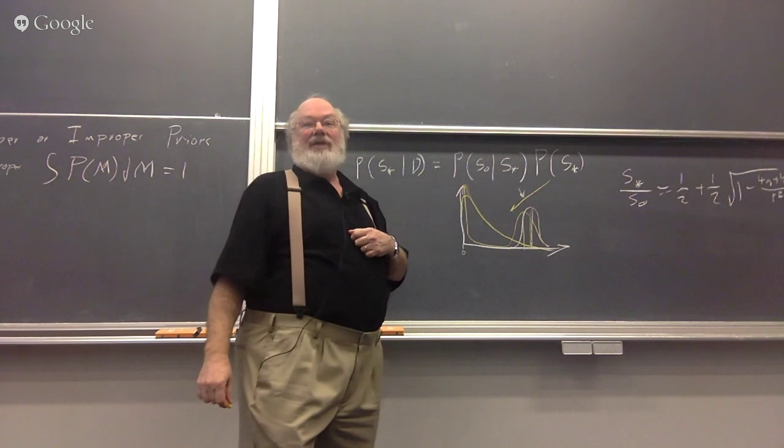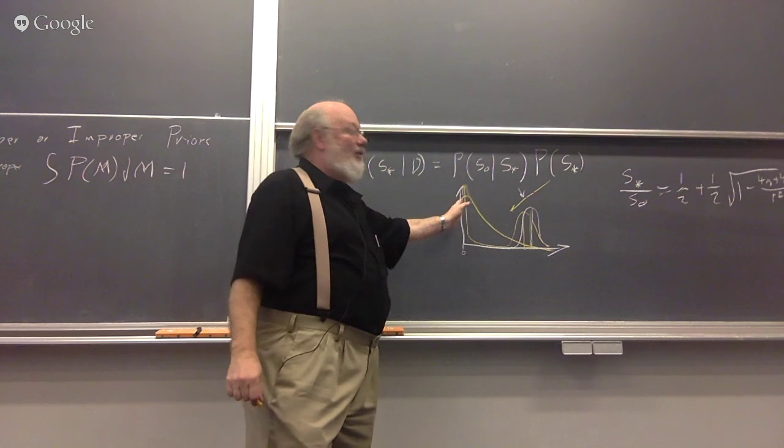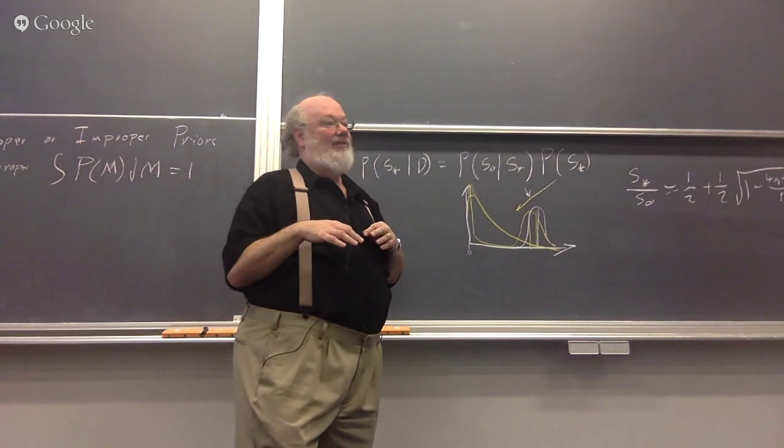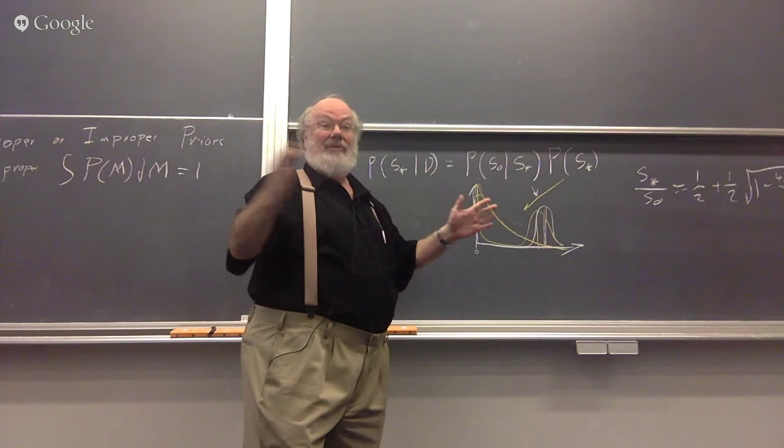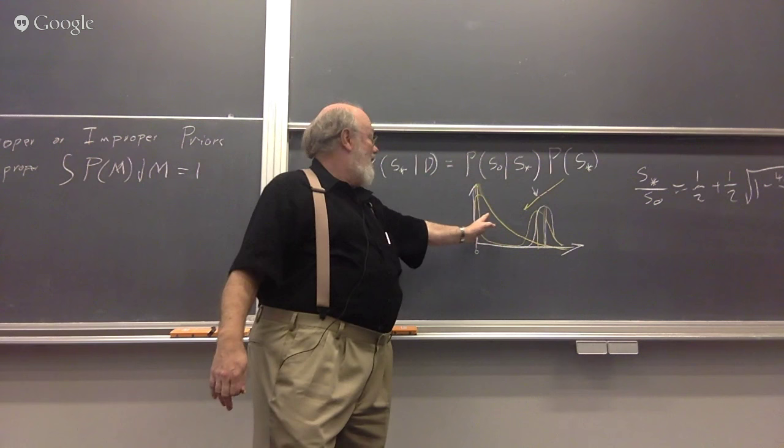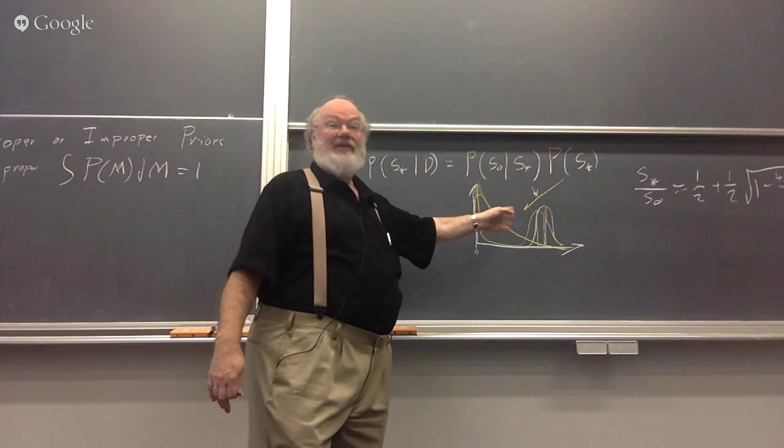A simple way of checking is to just set the prior equal to zero at some outlying range region of the model. If it's a one-parameter model, you can impose some limits on it. Then see how sensitive your results are to where you put those limits. If moving those limits changes the posterior a lot, then you know you're in trouble.